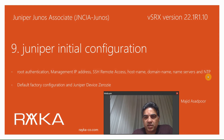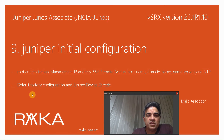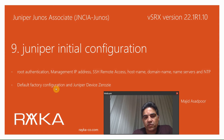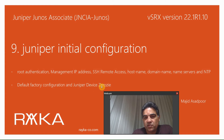It also includes configuring hostname, domain name, and name server for name resolution, and configuring an NTP server, which is critical for network devices. Sometimes it is required to reconfigure network devices from scratch. There are two options in Juniper devices: revert back to default factory configuration, or erase the configuration and data files using the zeroize feature, which will be discussed at the end of this video.